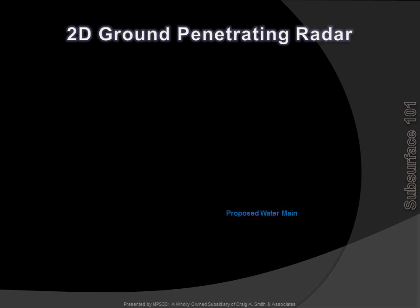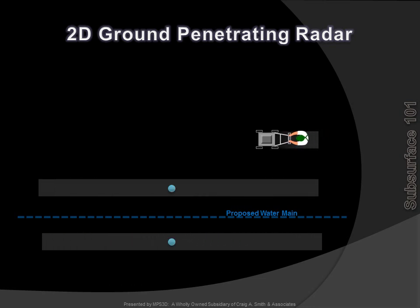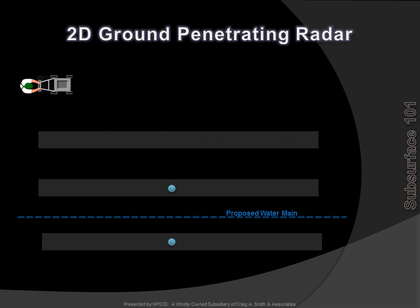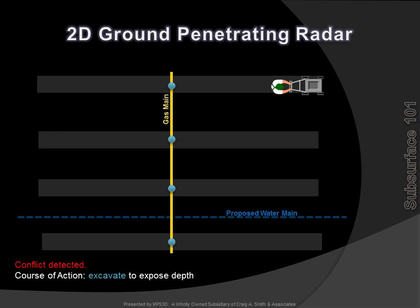Let's consider an example of 2D GPR locating for a proposed water main. 2D GPR scans are normally conducted in a grid pattern at regular intervals, say 5 feet to 10 feet. Through this method, in our example project, a gas main is found and located. Based on the locate, a conflict is detected between the gas line and the proposed water main. The normal course of action is to soft-dig to expose the gas main at the point of possible conflict. Due to the varied spacing of the grid scanning, a sewer line was missed — fortunately, it does not conflict.